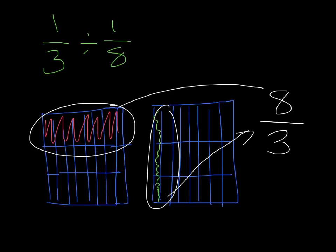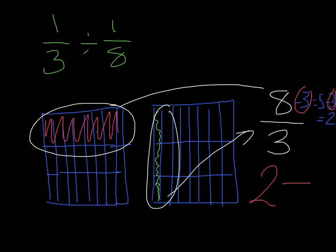We have to convert the improper fraction 8 over 3 into a mixed fraction by seeing how many times we can subtract 3 from 8. I take 8 minus 3 equals 5; then 5 minus 3 leaves a remainder of 2 — I can't subtract another 3. So I subtracted 3 two whole times, meaning my whole number is 2, my new numerator is 2, and the denominator stays 3. The answer is 2 and 2 thirds.